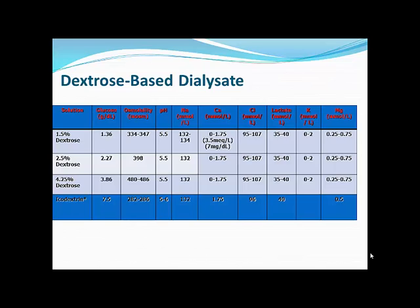The peritoneal solution osmolality is much higher than serum osmolality — that's where the osmotic force comes from. The pH is lower and more acidic than blood. Lactate is used as a buffer rather than bicarbonate, which was used in earlier solutions. Bicarbonate was replaced because during sterilization it would precipitate with calcium; switching to lactate solved that problem.